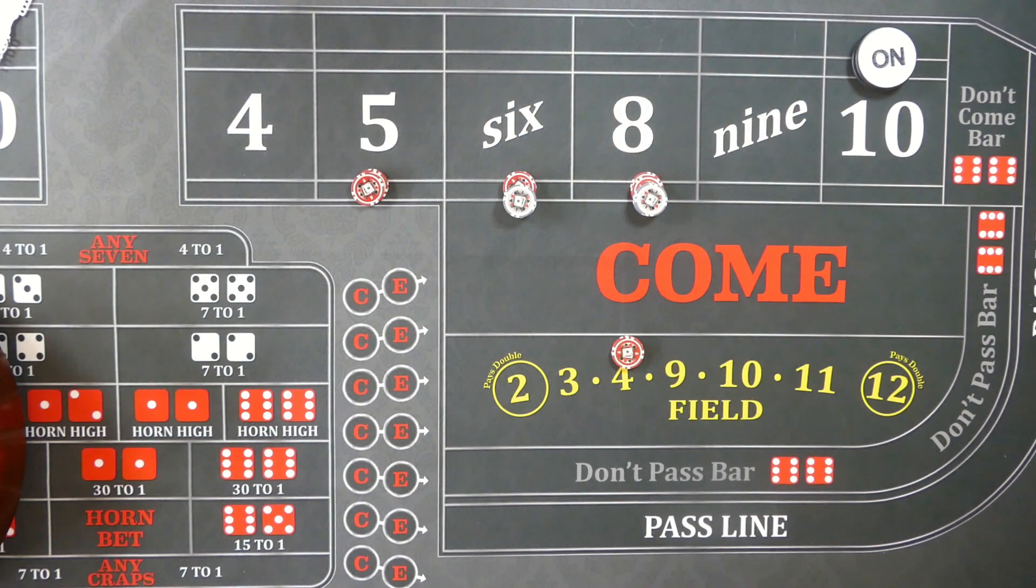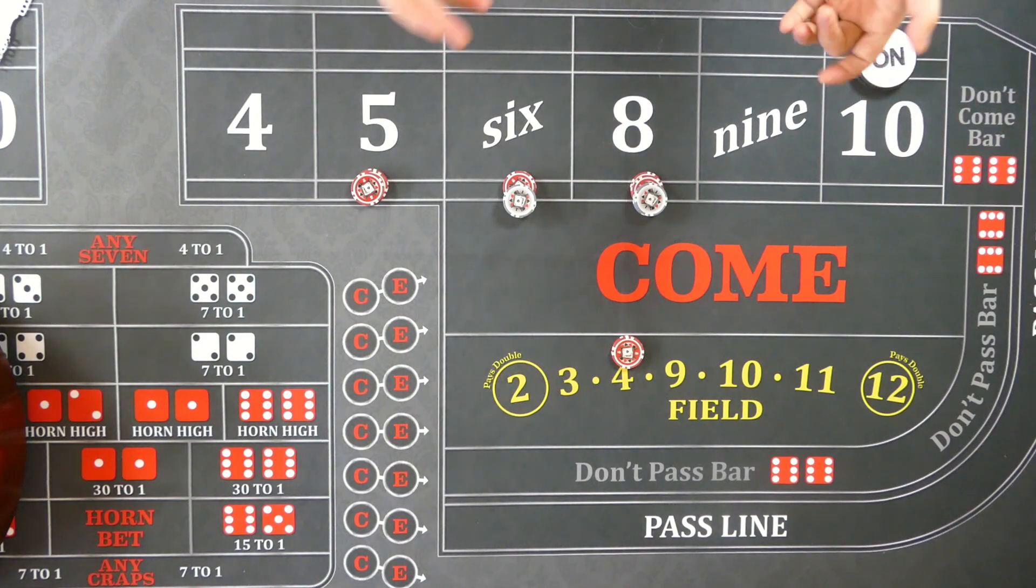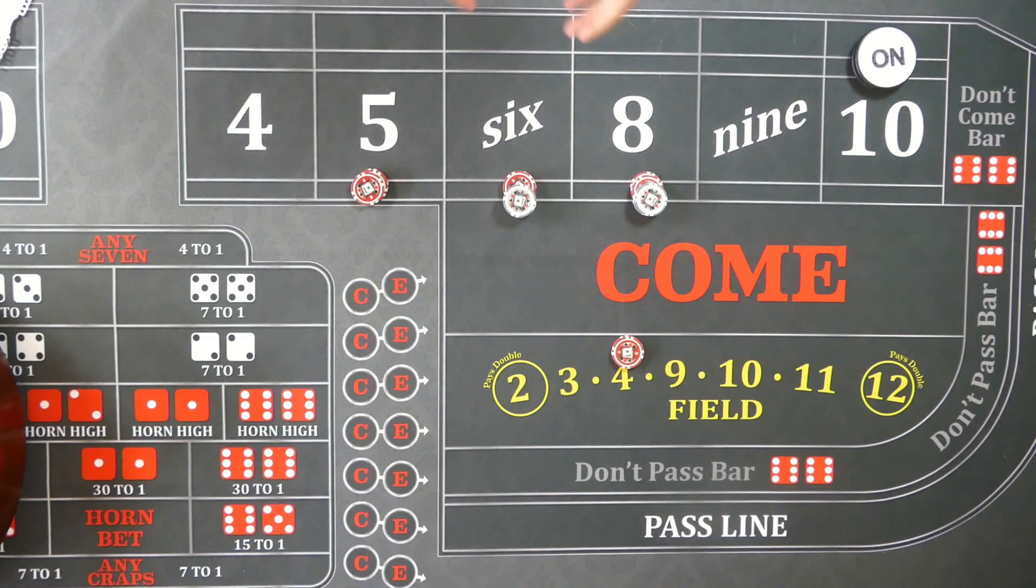Still as we've discussed in other videos analyzing the Iron Cross, it's still a poor strategy unless you are using it to expand out. If you're pressing your Iron Cross place bets, expanding out to the other numbers and then pressing, then you have a shot at winning.